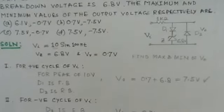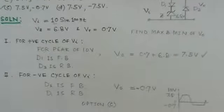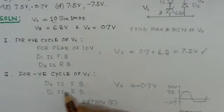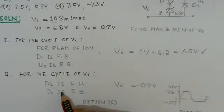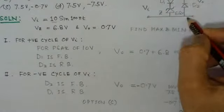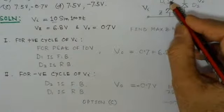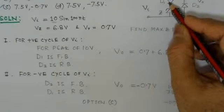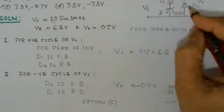For the negative cycle of the input VI, what we observe is D2 is forward biased and here D1 would be reverse biased. So this branch would be open.